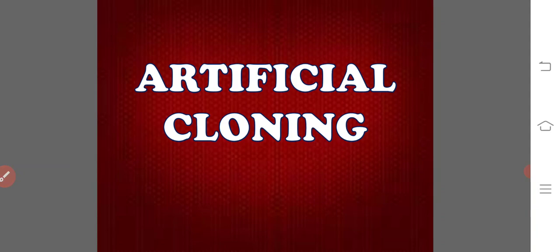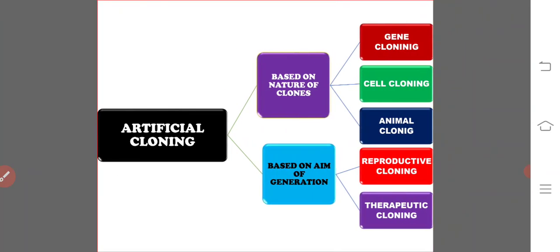Cloning of genes, cells, and organisms with intervention of human beings is called artificial cloning. Based on the nature of clones, artificial cloning is divided into three major types: gene cloning, cell cloning, and animal cloning.